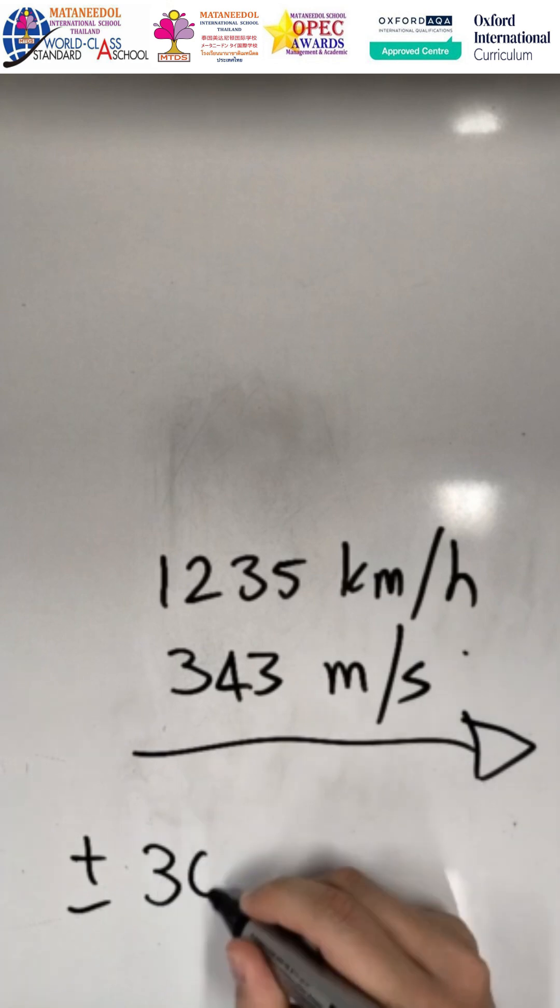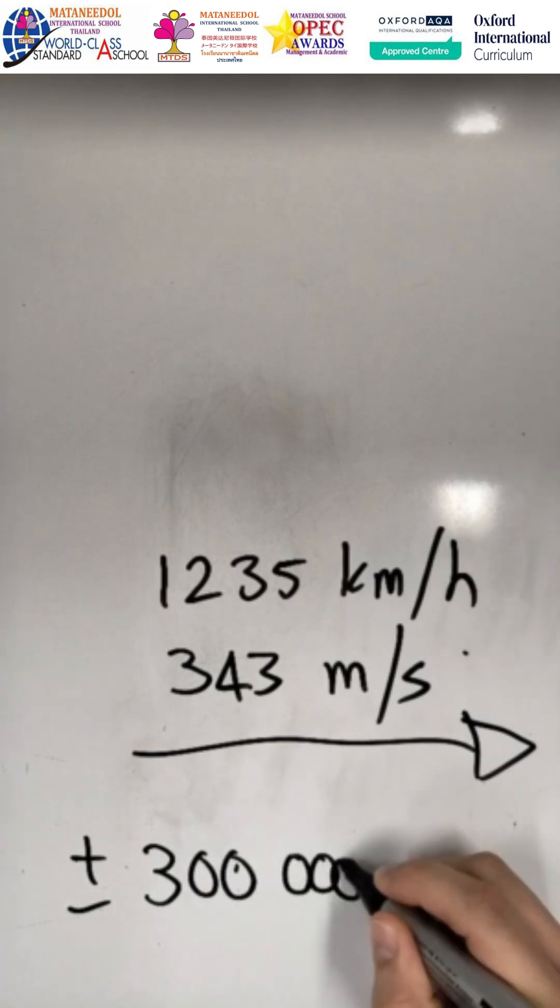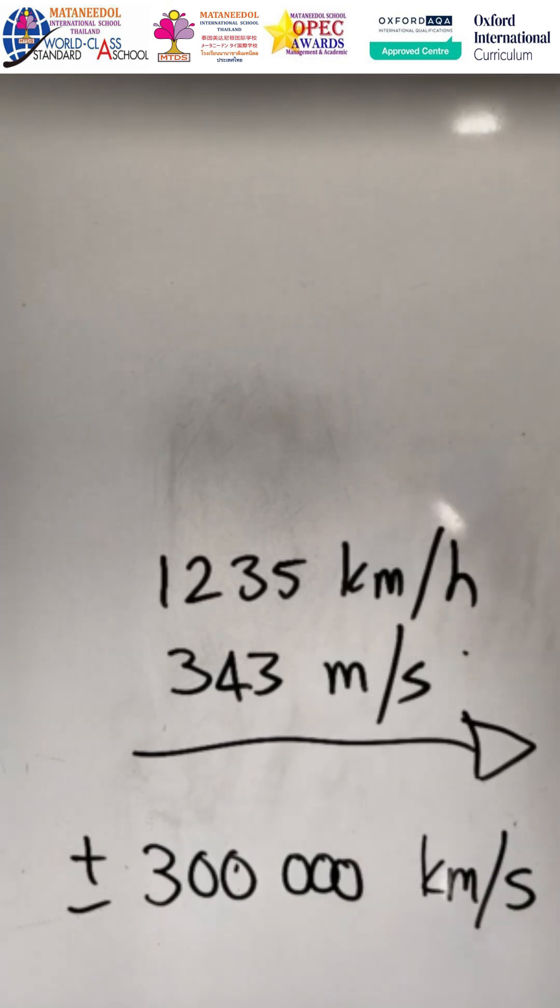The speed of light is plus minus 300,000 kilometers per second. Now that is extremely fast.